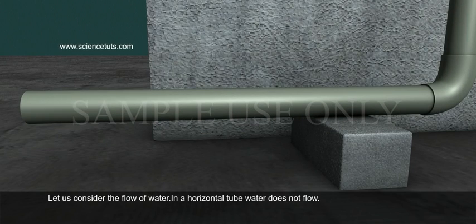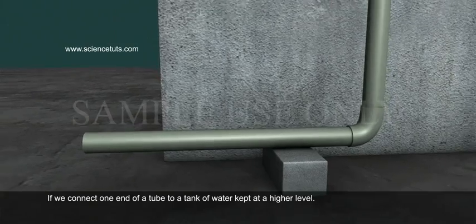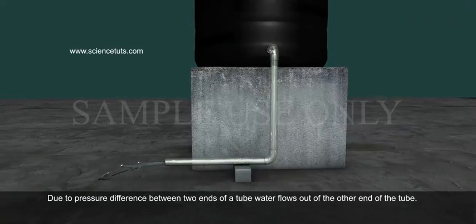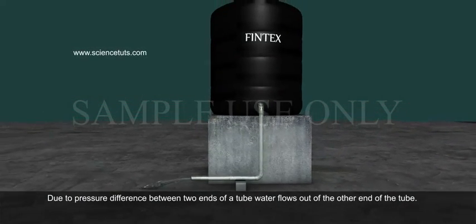Let us consider the flow of water. In a horizontal tube, water does not flow. If we connect one end of a tube to a tank of water kept at a higher level, due to pressure difference between two ends of a tube, water flows out of the other end of the tube.